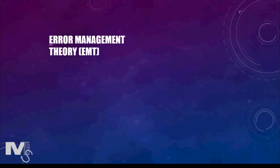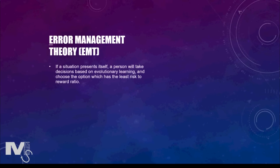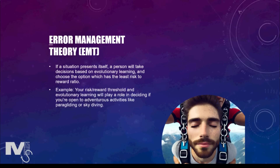Now we move on to the error management theory, which broadly deals with our decision-making abilities and judgement in potentially risky situations. If a situation presents itself with no clear answers, a person will react and take decisions based on evolutionary learning, choosing the option with a risk-to-reward ratio they are comfortable with. For example, some people are open to adventurous activities like paragliding or skydiving, while others consider these high-risk and would never choose to do them.